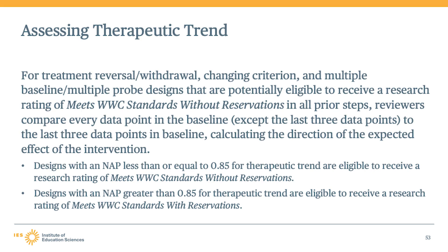All designs that reach the limited risk of bias stage will require assessment of therapeutic trend. These designs only include treatment reversal withdrawal designs, changing criterion designs, multiple baseline designs, and multiple probe designs. Reviewers should compare the final three data points within the first baseline phase to data points before the final three, using the non-overlap of all pairs calculated in the direction of the intervention effect. The final three data points will be the B series, and the data points prior to the final three will be the A series. If an improvement is an increase in the outcome, any time one of the final three data points has a larger value than one of the earlier data points, that pairwise comparison receives a 1; if smaller, it receives a 0.